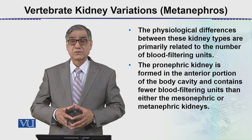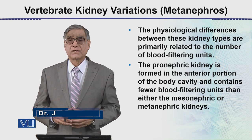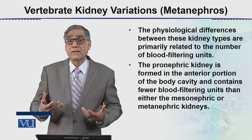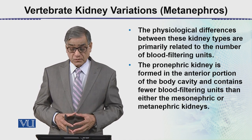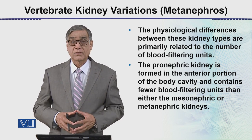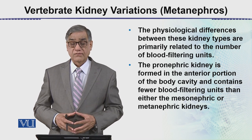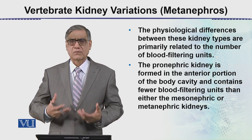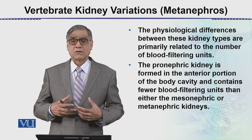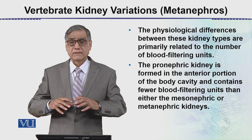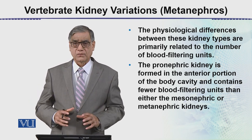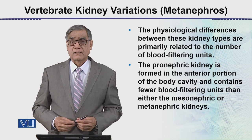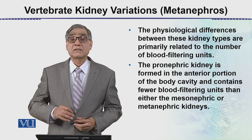The physiological differences between these kidney types are primarily related to the number of blood filtering units. In pronephros the blood filtering units are very few; in mesonephros there are more; and in metanephros the most — that may go up to a million. The pronephros is formed in the anterior portion of the body cavity and contains fewer blood filtering units, that is the glomerulus or renal capsule. As evolution and development progressed, the number and efficiency of these units increased.